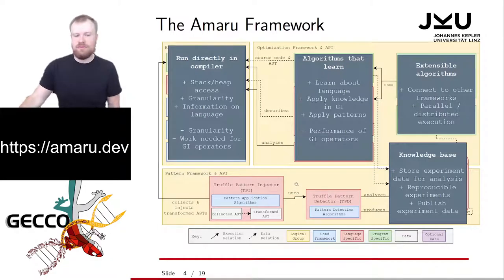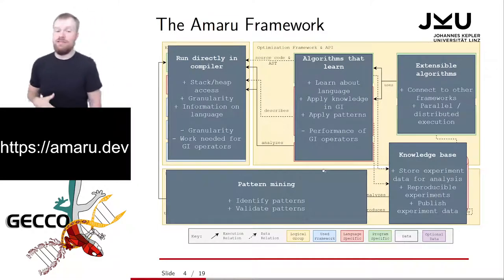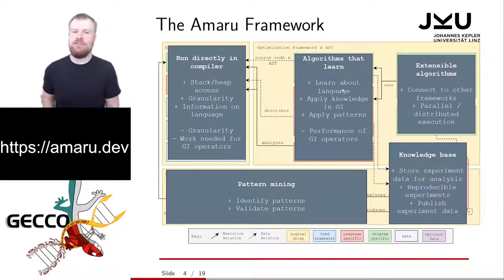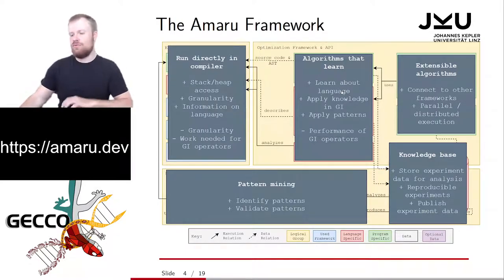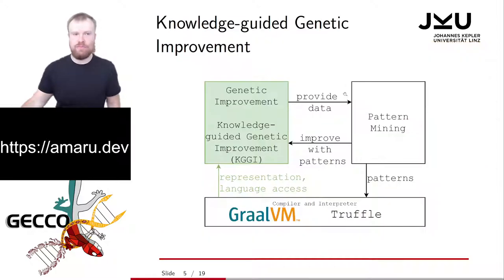At the final part of the architecture, we have the pattern mining component, which is here to identify patterns, validate them, and then provide them to the KGGI algorithm. Let's take a deep dive into what the two major algorithms in the framework actually do, starting on the genetic improvement side with knowledge-guided genetic improvement.